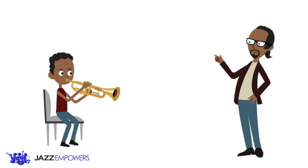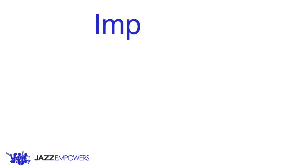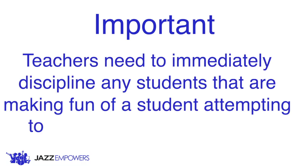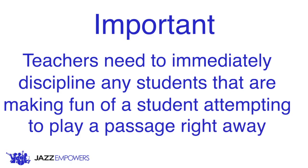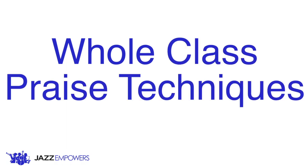It is essential to establish a culture in your rehearsals where students are encouraged and praised for trying to play something they feel they cannot play. This means that as the leader of the classroom, you need to immediately shut down any other students making fun of the player for not knowing how to play something or for not sounding that great. For positive reinforcement, you can implement whole class praise techniques such as clapping or snapping in order to encourage students for not opting out.